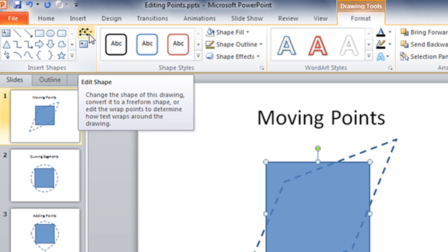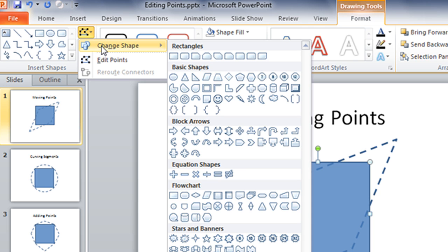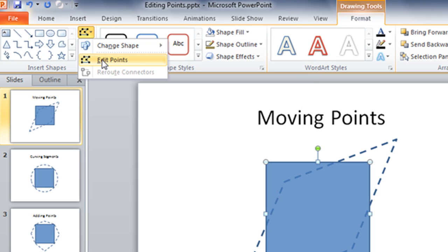That is your Edit Shape icon, which will open up a menu where you can do a couple of things, including change the shape with any of PowerPoint's predetermined shapes, or you can edit points.